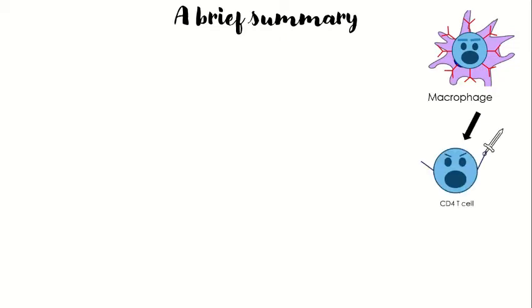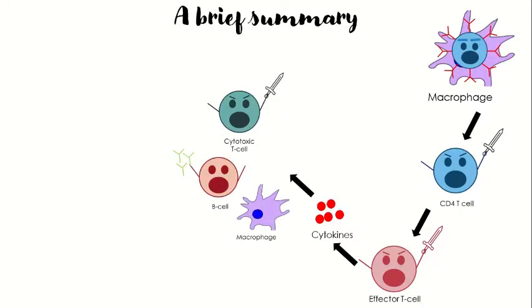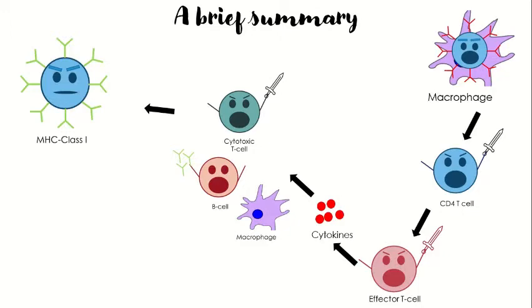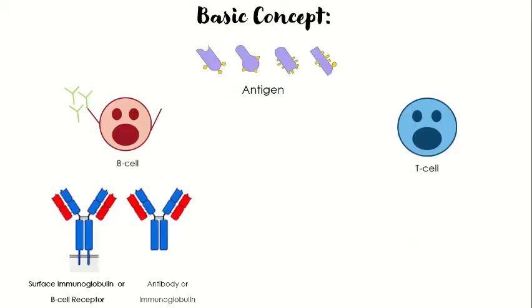Let's make a mind map of how the various steps fall into place. Initially, whenever a pathogen enters the body it is taken up by the antigen-presenting cells and displayed via MHC class 2 molecules. CD4 T cells recognize the bound peptide and are activated to effector T cells, which release cytokines that activate cytotoxic T cells, B cells that make antibodies, and macrophages that engulf antigens. Cytotoxic T cells (CD8) recognize antigens presented by MHC class 1 molecules and are activated to cytotoxic T lymphocytes that kill off the infection.